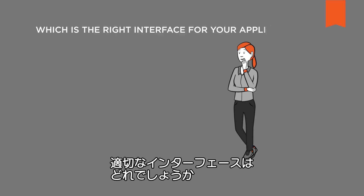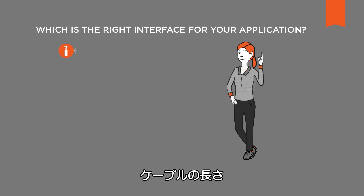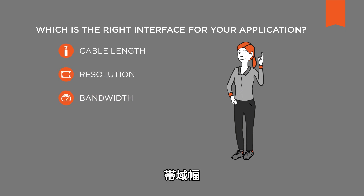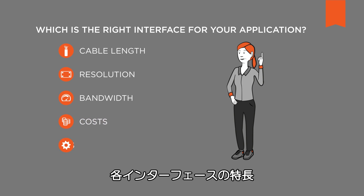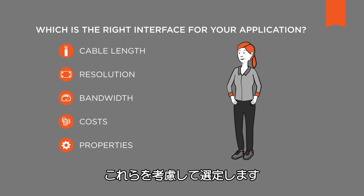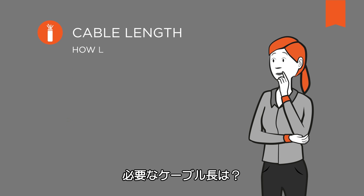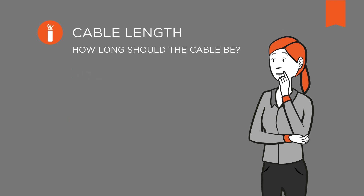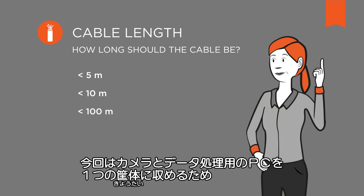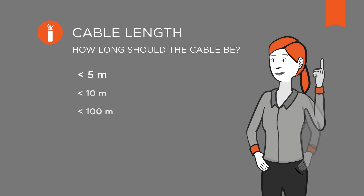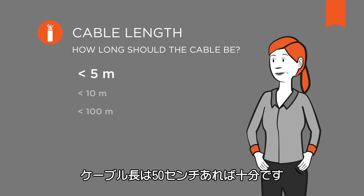So, which is the right interface for this application? Cable length, resolution, bandwidth, costs, and interface-specific properties are the crucial criteria for selection. How long should the cable be — 5 meters or less, between 5 and 10 meters, or up to 100 meters? For this solution, the camera and embedded PC for processing the data are placed in one compact housing, meaning that a cable length of just 50 centimeters is enough.